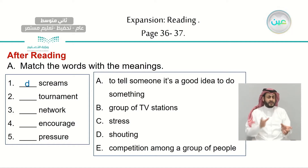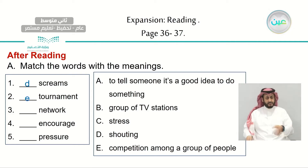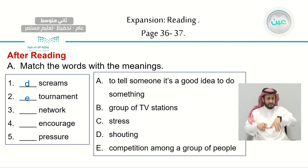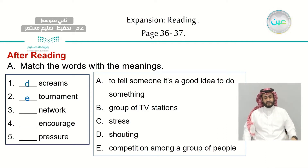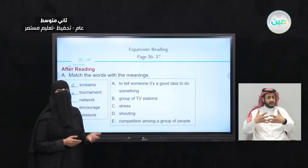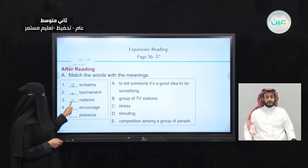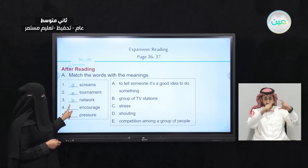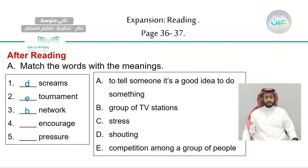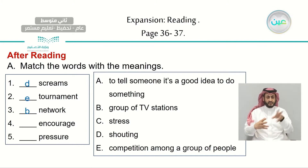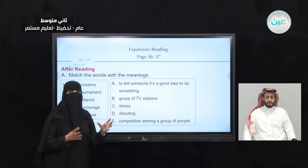Number two — 'tournament.' The meaning is E: a competition among a group of people. Now how about 'network'? Network is the letter B — group of TV stations. So a group of TV stations is called a network.